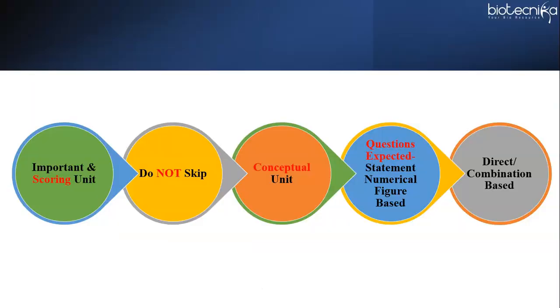Unit 8 of CSIR Net Life Sciences is all about genetics. It is an important and scoring unit as it carries a weightage of minimum 25 marks. Thus, it is a big risk to skip this unit. In fact, you don't need to, as we all have more or less some idea about basic genetics from our plus 2 level.